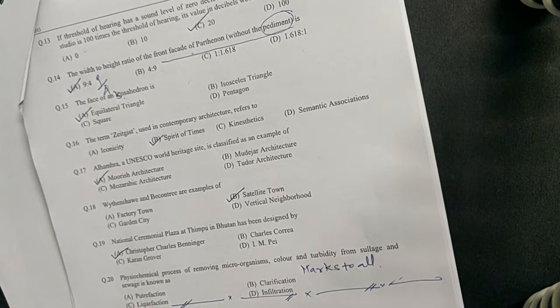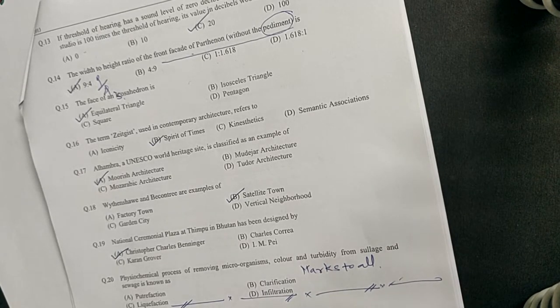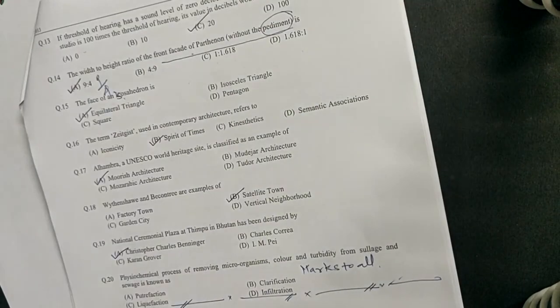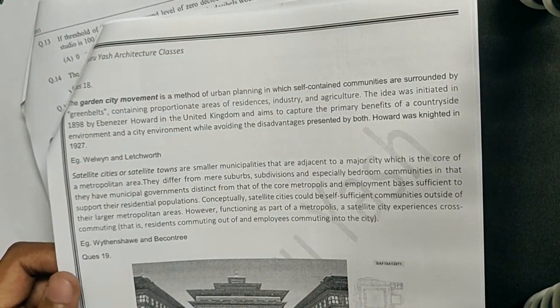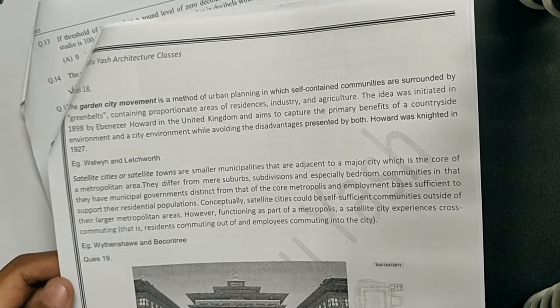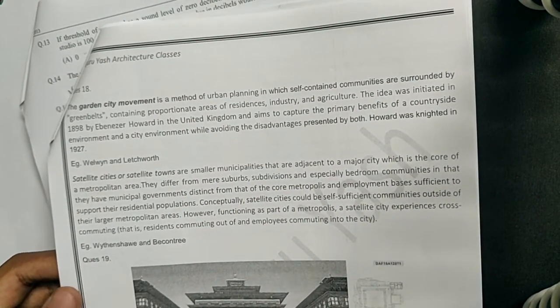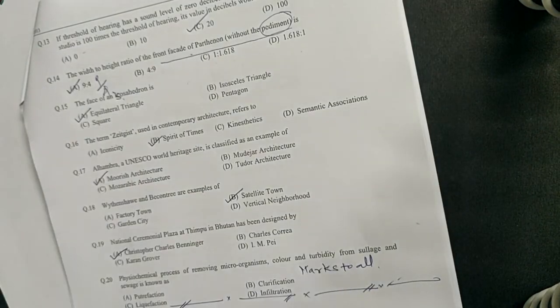The next question: Vaithin Shaw and Beacon Tree are examples of which of the following? They are examples of satellite towns. Welwyn and Letchworth are examples of the Garden City movement. You can read about these in brief in the notes provided.